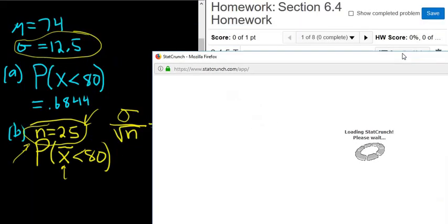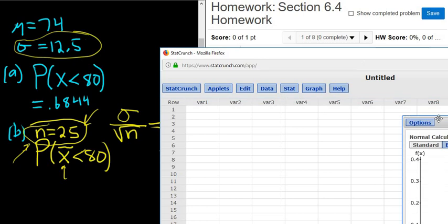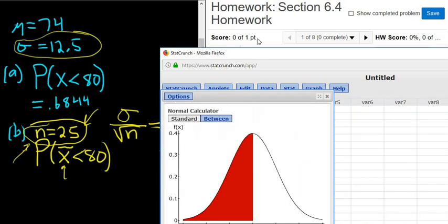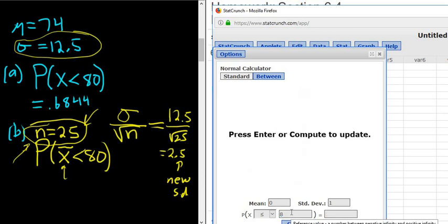So I'm going to go back to StatCrunch. Question help, StatCrunch. Yay, it's still open. So we go to Stat, Calculators, Normal. And it's still 80, so 80 is the same. But the mean is 74 still, so that hasn't changed.